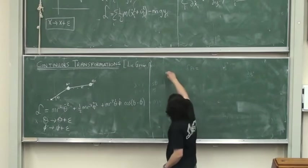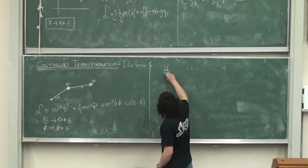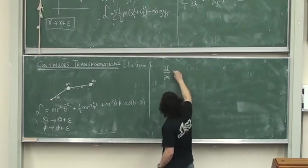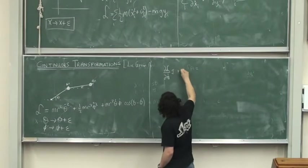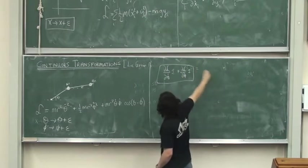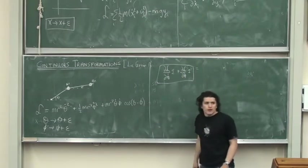So you can work out those conserved quantities. It's always just going to be del L del theta dot times f_theta, which is one, plus del L del phi dot times f_phi. This guy will be conserved.